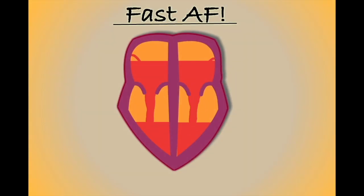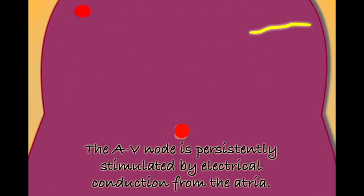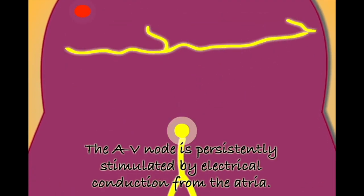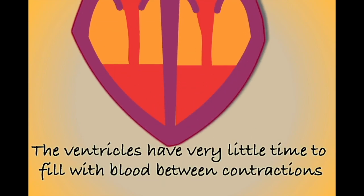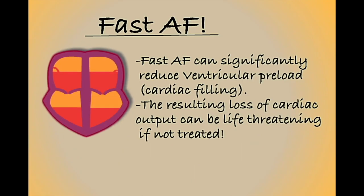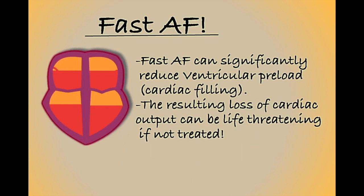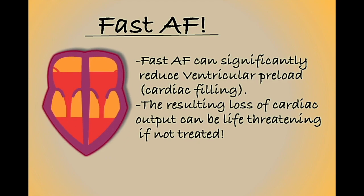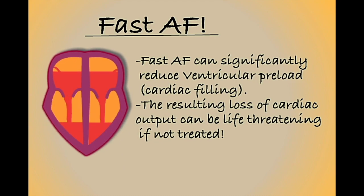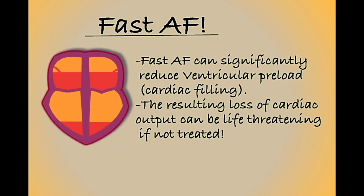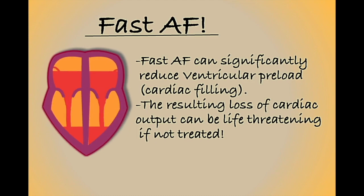Irregular ventricular contractions become especially significant when they lead to fast AF. The AV node can become overstimulated in AF, leading to a very fast rate of ventricular contractions. For the ventricles to pump effectively, they need adequate time to fill with blood between contractions. A fast ventricular rate can be dangerous as the ventricles may be denied adequate filling time, resulting in them pumping significantly lower volumes of blood. Fast AF has the potential to result in a life-threatening drop in blood pressure, requiring urgent medical attention.